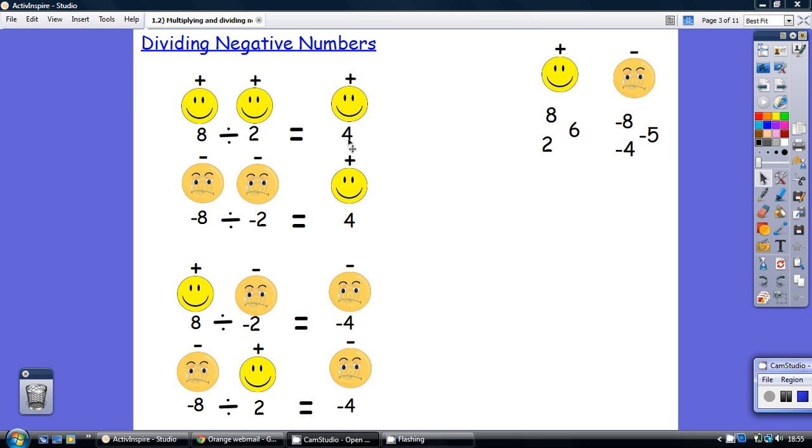So if it's a happy 8 and a happy 2, you know plus and plus, so it's a happy divided by a happy, that's going to give you a happy answer.